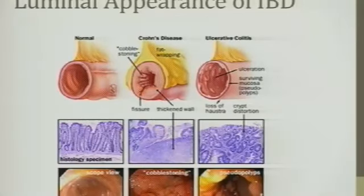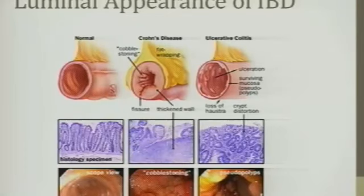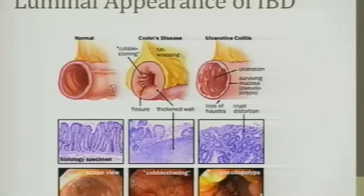Ulcerative colitis has bloody stool because of the ulcerations — blood comes through those ulcerations. You can also get polyps in there as well.